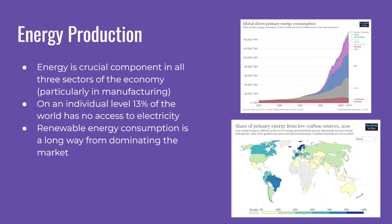Let's talk about energy production. Energy is a crucial component in all three sectors of the economy, particularly in manufacturing. On an individual level, 13 percent of the world has no access to electricity, which essentially means there is little access to light during the night, and they essentially work with the sun.